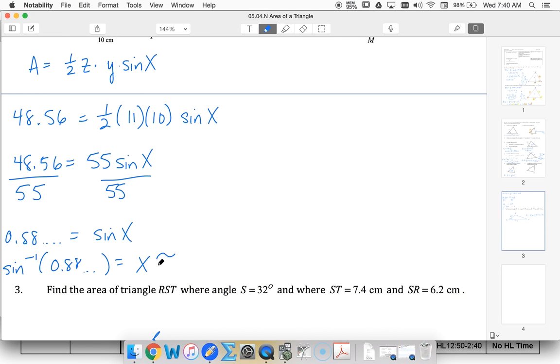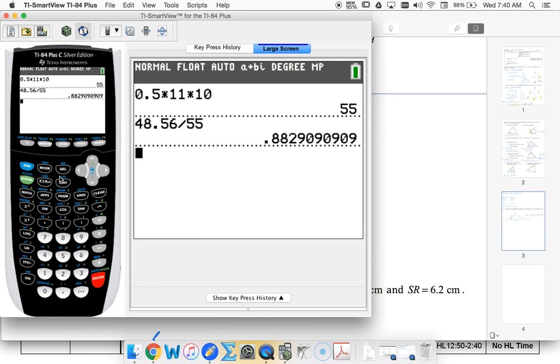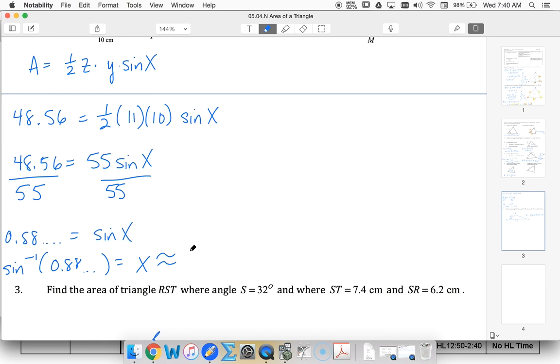So second sine of that whole answer: 61.99. When I round to three significant figures, this is going to round up. I'm going to end up with about 62.0 degrees.